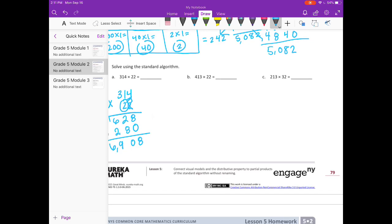Part B. 413 times 22. So starting in the ones place. 2 times 3 is 6. 2 times 1 is 2. 2 times 4 is 8. Put our 0 down. On to the tens place. 2 times 3 is 6. 2 times 1 is 2. 2 times 4 is 8. Add everything together. We get 9,086.